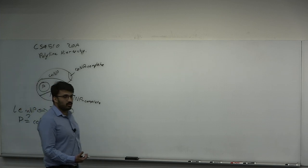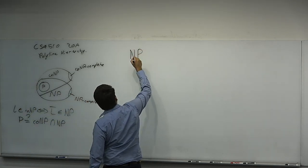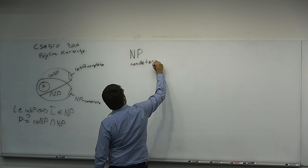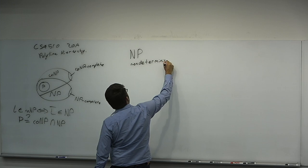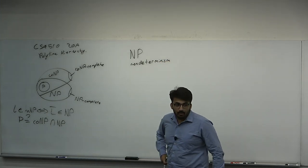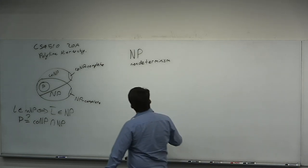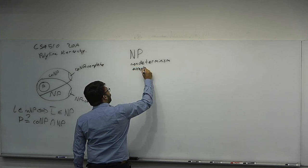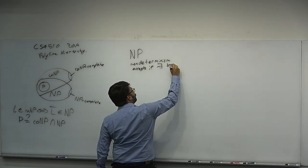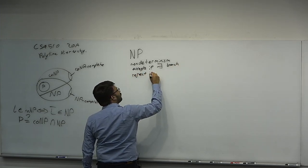Let's try to characterize what NP is. NP has several interesting features. First, it has a definition in non-deterministic polynomial time — it's got non-determinism. Non-determinism: it accepts if there exists a computation path, an accepting branch. And a non-deterministic machine rejects if all branches reject.